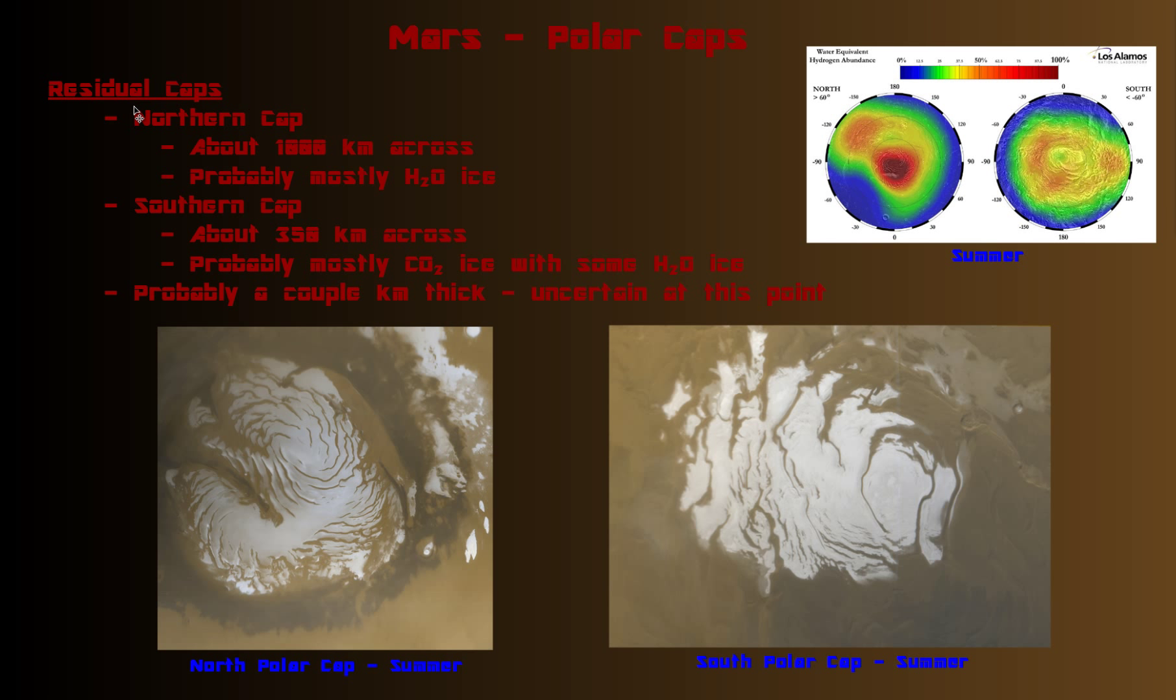The residual cap, that's the cap that stays there throughout the year. There's residual caps both in the northern pole and the southern pole. The northern cap is bigger, about 1,000 kilometers across. And that's this guy right here. It's probably mostly water ice. There's probably quite a bit of water up there.